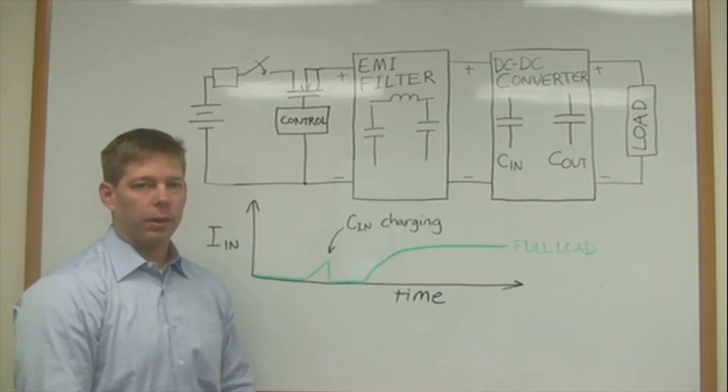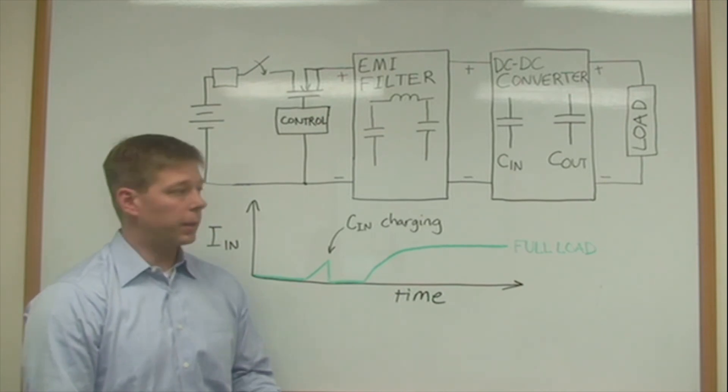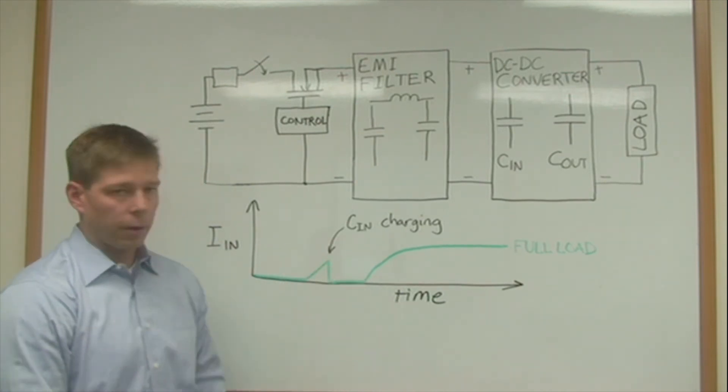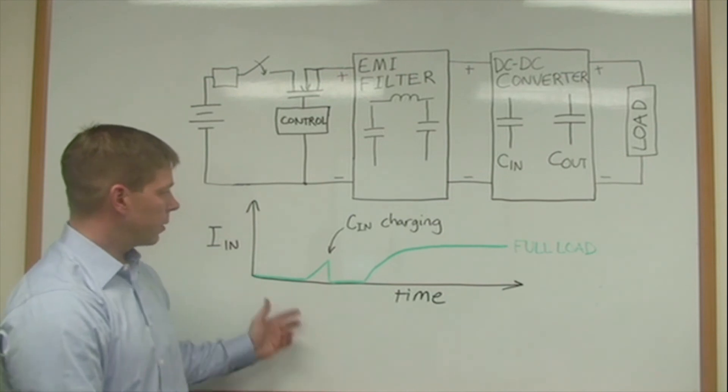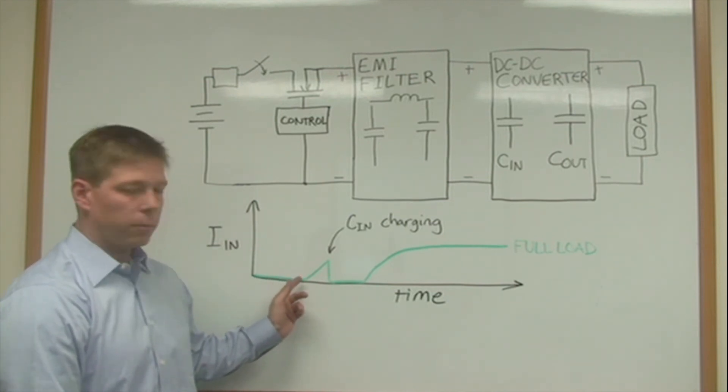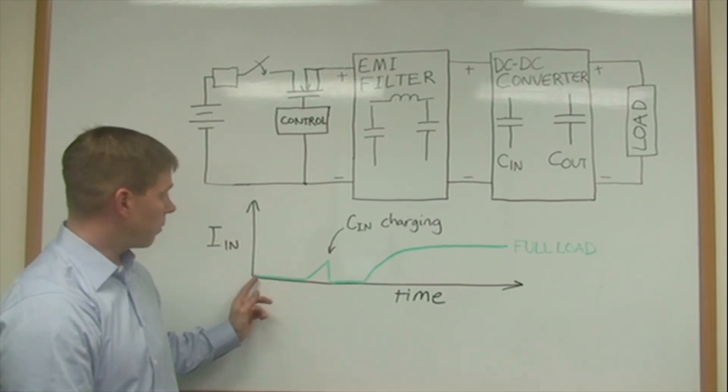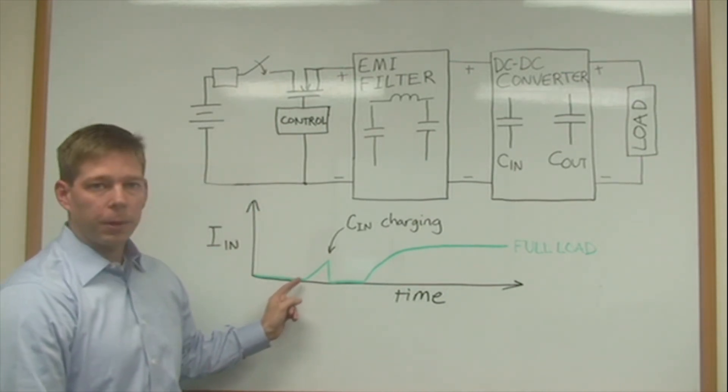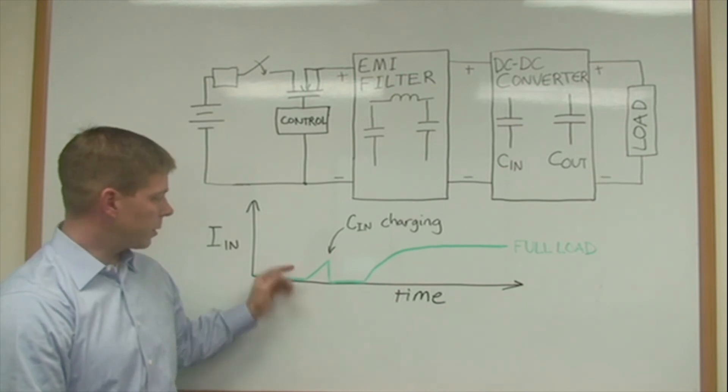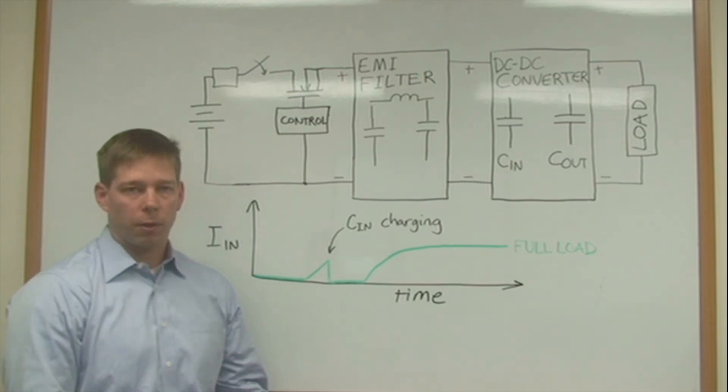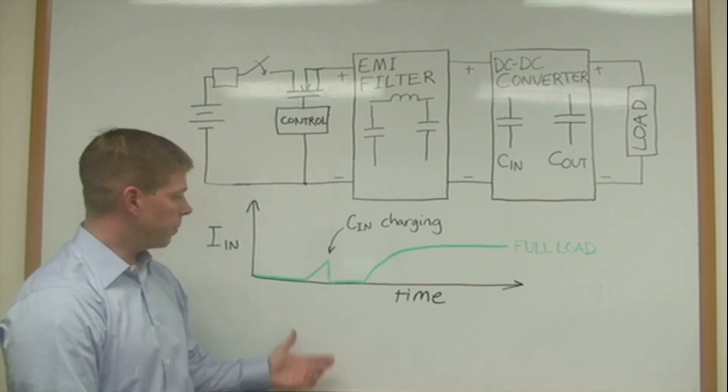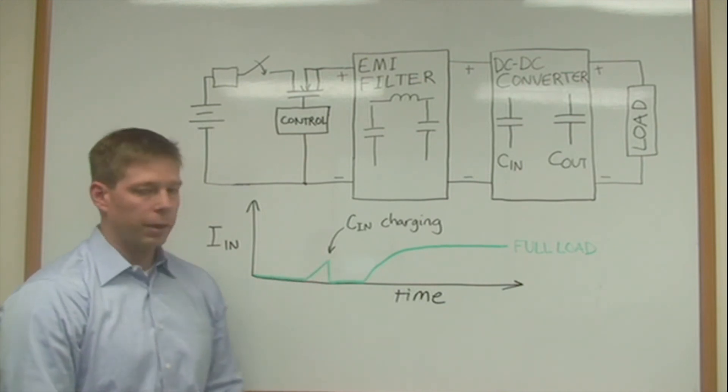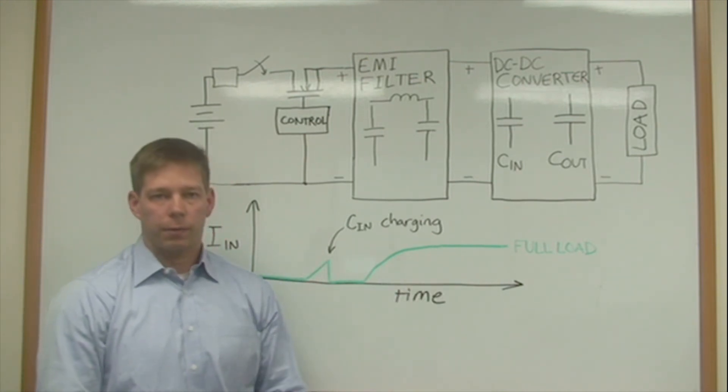With the inrush current limiting circuit implemented or with one of our products that control inrush current, your input current waveform is going to look like this. When the input switch is shut, the input capacitor charging waveform is going to be greatly reduced and the dI/dt of that waveform is going to be much lower. That will improve EMI performance and also the peak of that current never exceeds the full load running current of the converter.